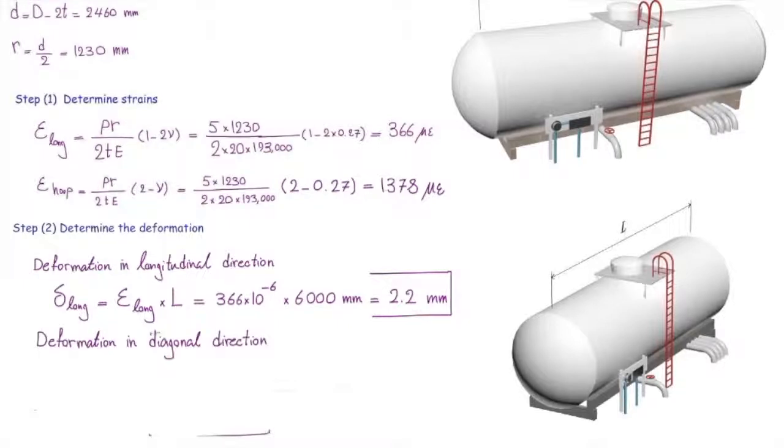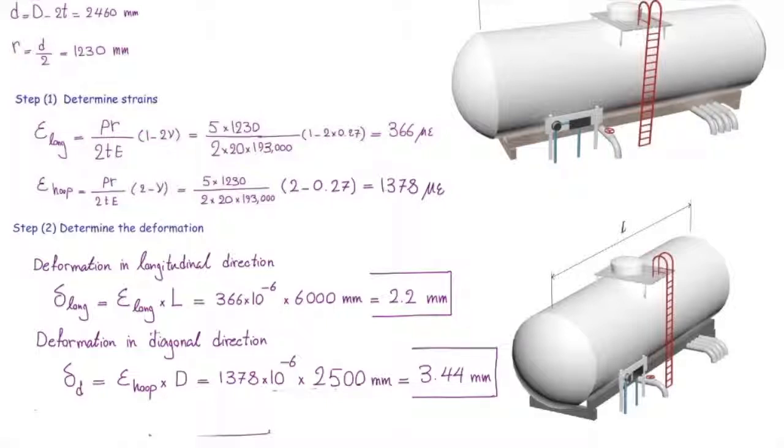Now let's determine the change in diameter. Diameter is related to hoop strain and can be determined similarly: strain in the hoop direction multiplied by initial diameter. That's 1,378 times 10 to the minus 6 multiplied by 2,500 millimeters, which equals 3.44 millimeters. These are the changes in length and diameter.